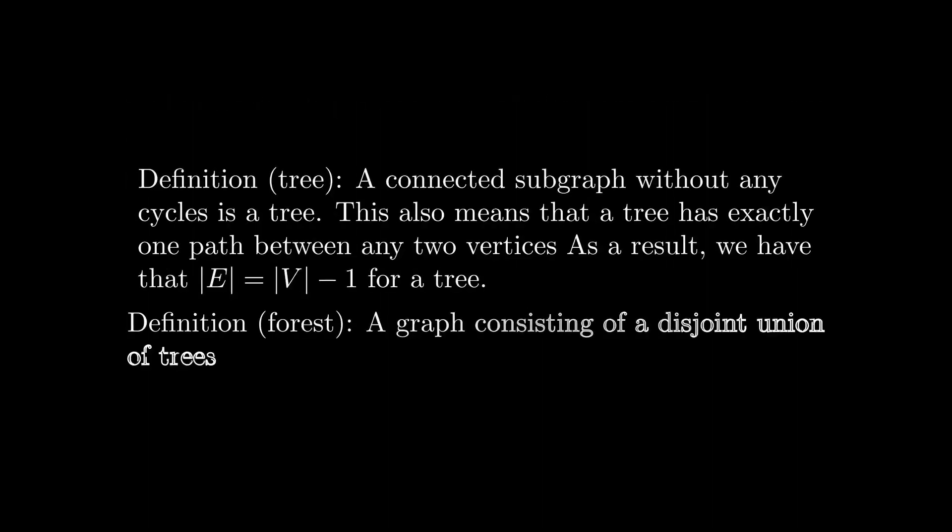A graph is connected if there is a path from any vertex to any other vertex in the graph. A connected subgraph without cycles is known as a tree. This also means that there is exactly one path from any vertex to any other in a tree. The number of edges in a tree is always given by the number of vertices minus one.